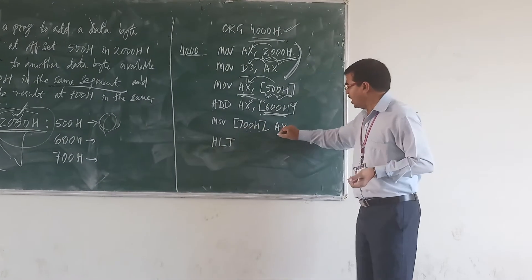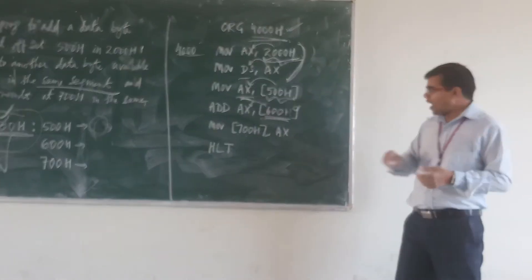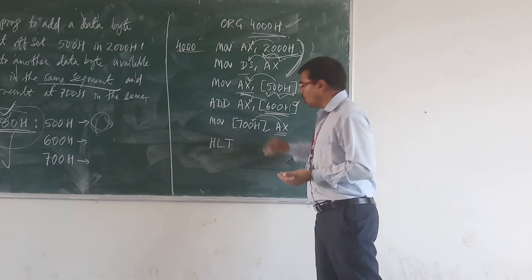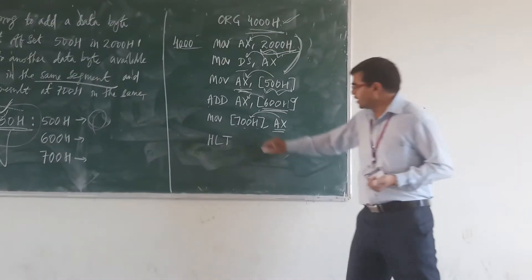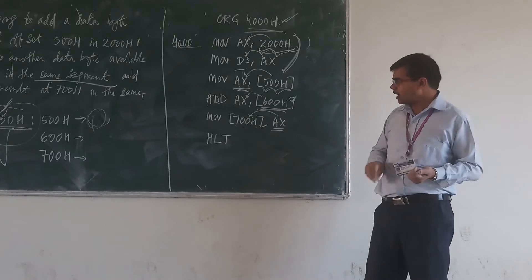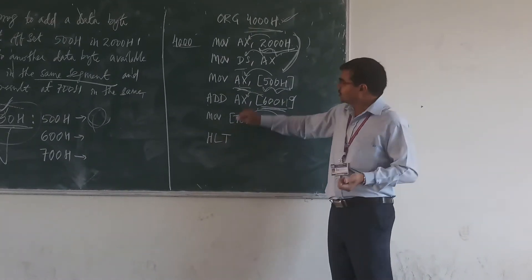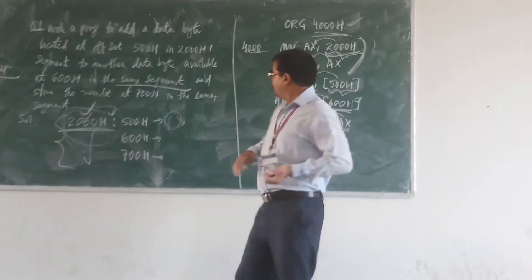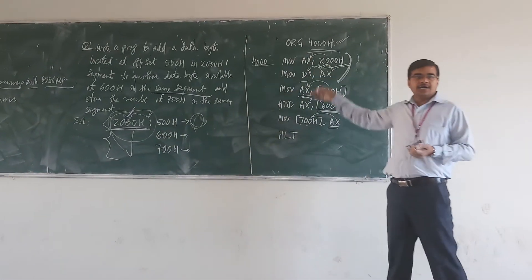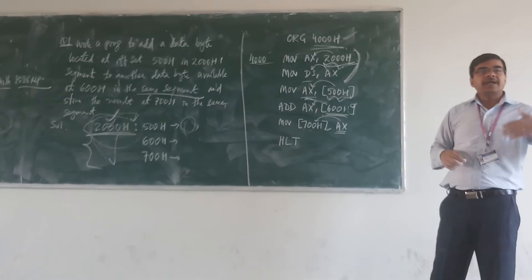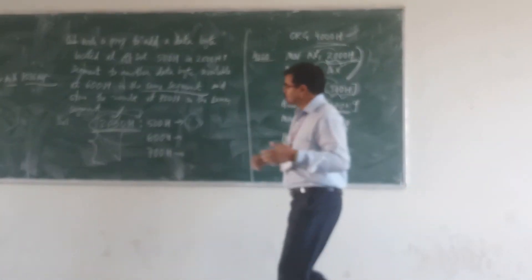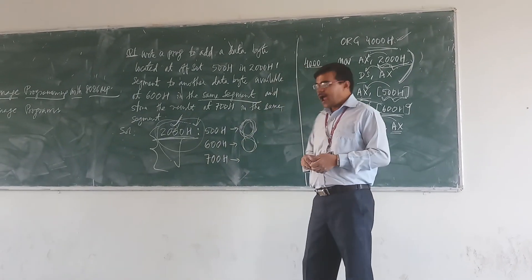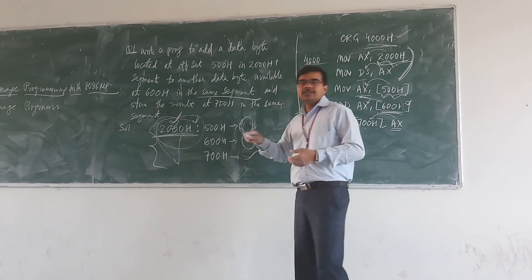Then MOV 700H, AX — the result stored in AX is copied to memory location 700H. Then HLT. Since all these operations are in the same segment, you don't have to initialize the segment again. So the first data is at 500H, the second data at 600H, and the result is stored at 700H.